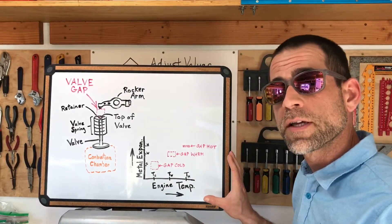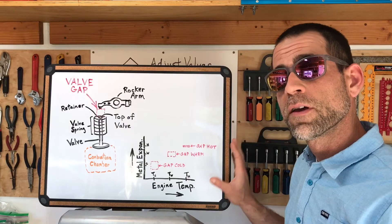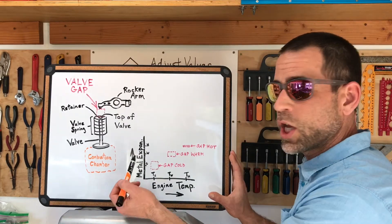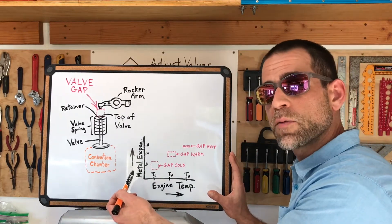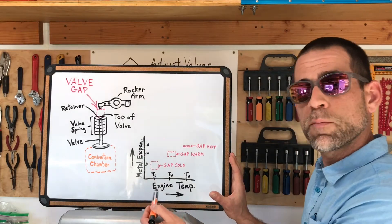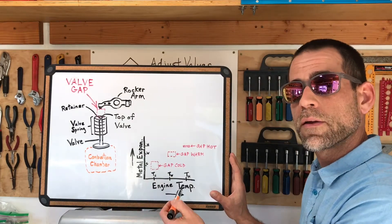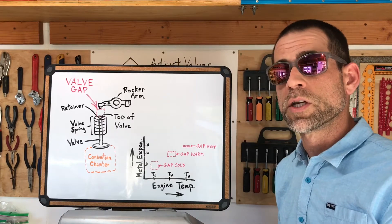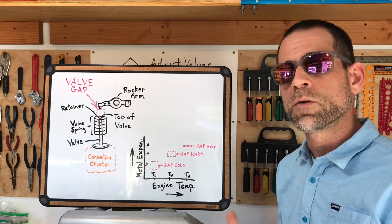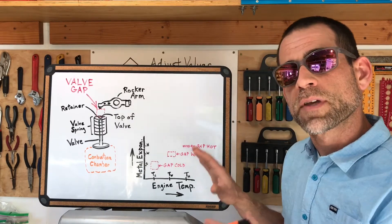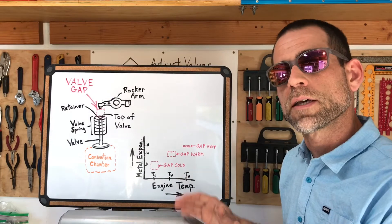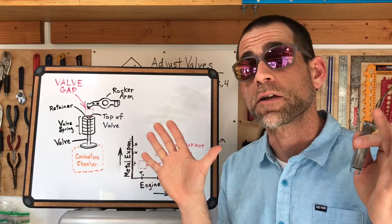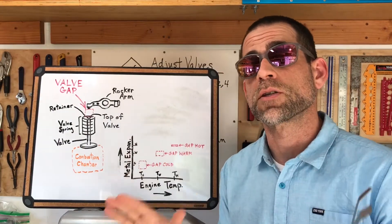The cool thing about this figure is that we've derived the coefficient of thermal expansion. It's pretty simple to understand — just a change in the size of the metal versus the change in the temperature of the metal. The coefficient of thermal expansion is a really important property of metal that engineers use when they do calculations and develop specifications for engines like this. That's basically what's happening on a conceptual level and why you need to set your valves when the engine's cold.